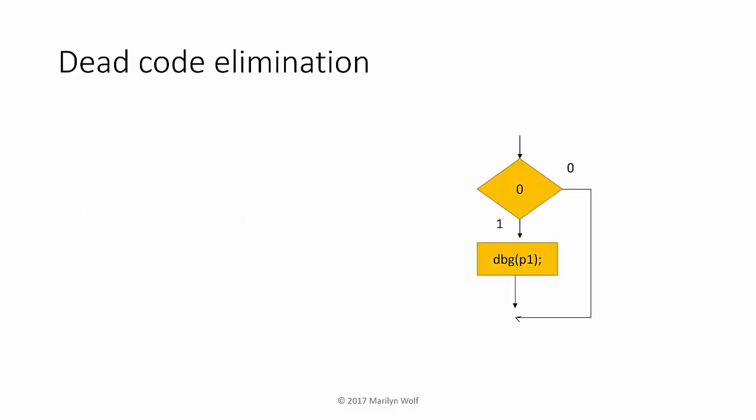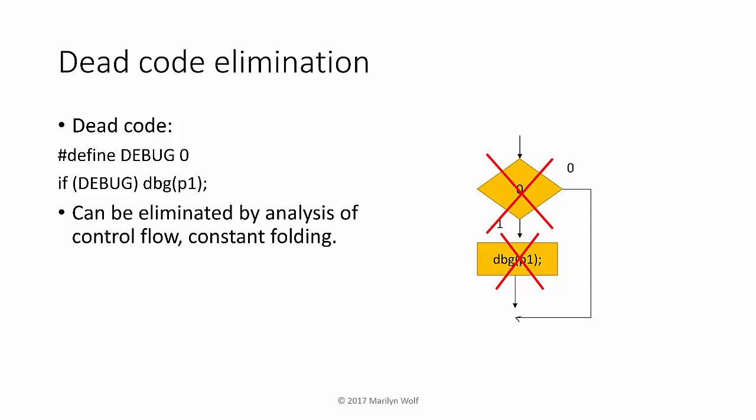Dead code elimination is a very useful optimization. People may inadvertently introduce dead code, or it may arise naturally during compilation. In this case we have a test for false — false is never true, so we cannot execute the code in the true part of the statement. We can eliminate that debug statement, and since we're not going to execute the conditional code, we don't need the conditional test either, so we perform dead code elimination twice. Consider code with a parameter that turns debugging on and off: if debugging is turned off, we can analyze the control flow and apply some constant folding to identify and eliminate that dead code.